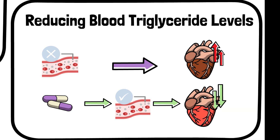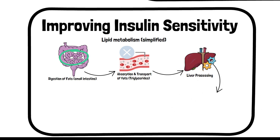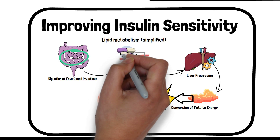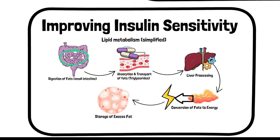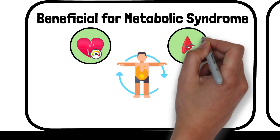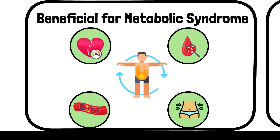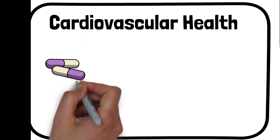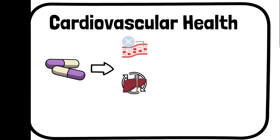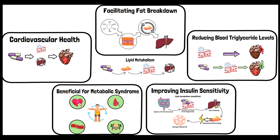This triglyceride-lowering effect is likely due to inositol's role in improving insulin sensitivity, as insulin resistance is often associated with high triglyceride levels. Insulin plays a significant role in lipid metabolism, including the regulation of triglycerides, and by enhancing insulin sensitivity, inositol helps maintain normal triglyceride levels. Metabolic syndrome — characterized by high blood pressure, high blood sugar, excess body fat around the waist, and abnormal cholesterol or triglyceride levels — can benefit from inositol's role in lipid metabolism and cardiovascular health.